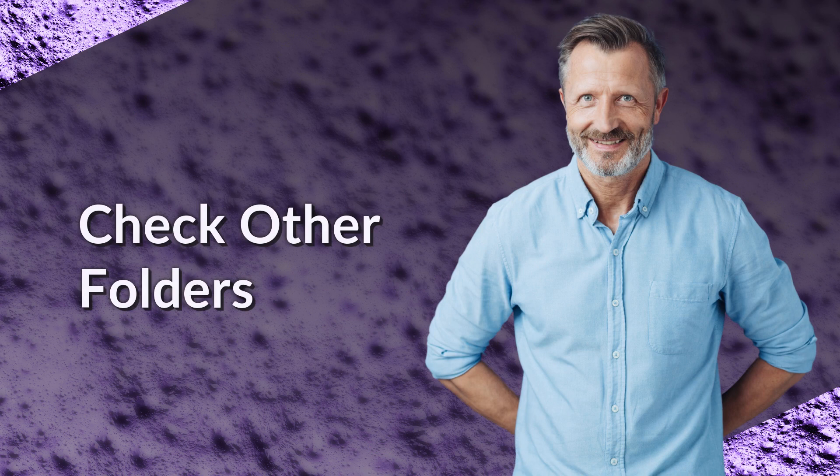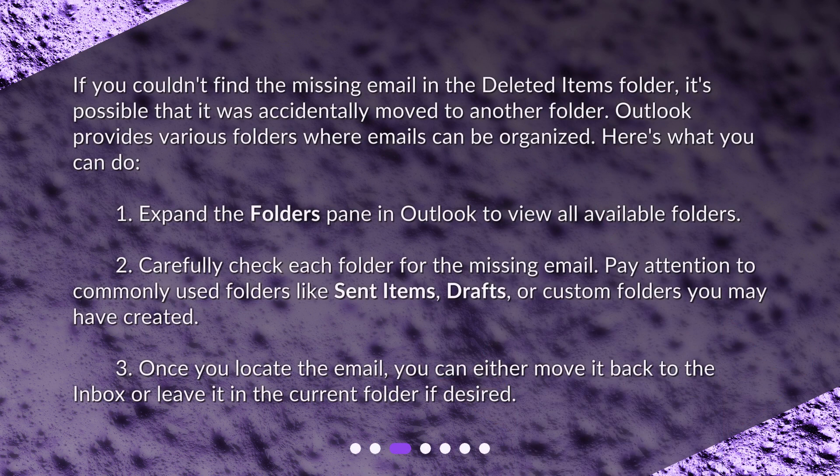Check Other Folders. If you couldn't find the missing email in the Deleted Items folder, it's possible that it was accidentally moved to another folder. Outlook provides various folders where emails can be organized. Here's what you can do. 1. Expand the Folders pane in Outlook to view all available folders. 2. Carefully check each folder for the missing email.